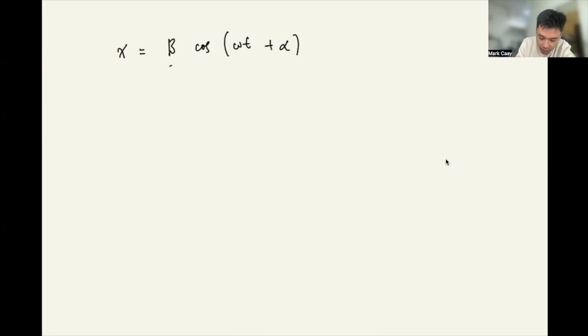In this case, omega here is a parameter. So our goal is we want to eliminate the B and the alpha. So this is our goal: eliminate B and alpha. So how do we do that?